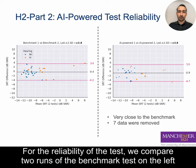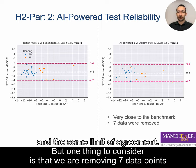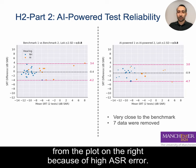For the reliability of the tests, we compare the two runs of the benchmark test on the left and the two runs of the AI-powered test on the right. Both have an average close to zero and the same limit of agreement. One thing to consider is that some data points are removed from the AI-powered test plot due to high ASR error.